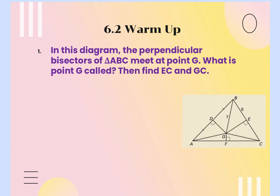So the perpendicular bisectors' point of concurrency is called what? The perpendicular bisector has the longest name, so its point of concurrency also has the longest name, which is circumcenter. So if the perpendicular bisectors meet at point G, then G is called the circumcenter.